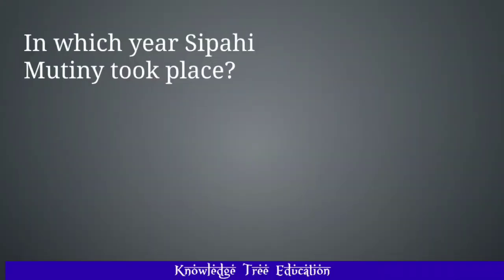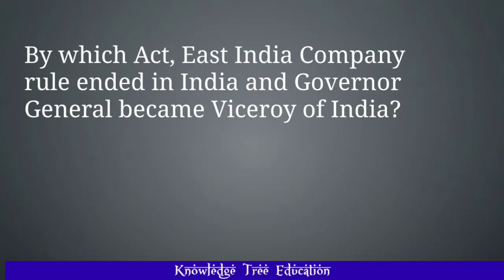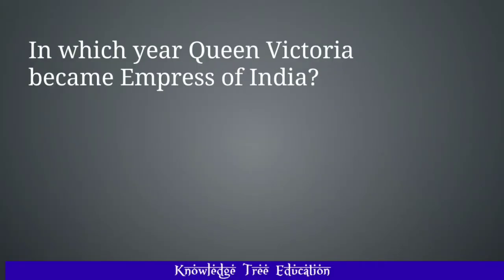In which year did the Sepoy Mutiny or Indian Rebellion take place? And the answer is 1857. By which act did the East India Company rule end in India? And the answer is the Government of India Act 1858. In which year did Queen Victoria become Empress of India? And the answer is 1877, by the Royal Titles Act 1876.